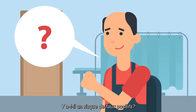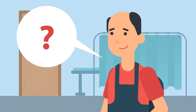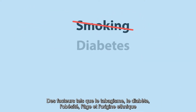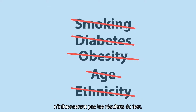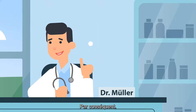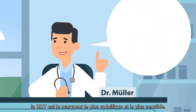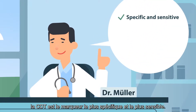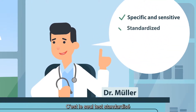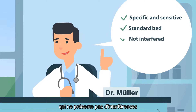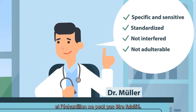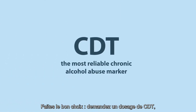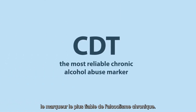Is there a risk of false positives? No. Factors such as smoking, diabetes, obesity, age and ethnicity will not influence the results of the test. Therefore, CDT is the most specific and sensitive marker. It's the only standardised test that doesn't have interferences and the sample cannot be adulterated. CDT is the right choice for the most reliable chronic alcohol abuse marker.